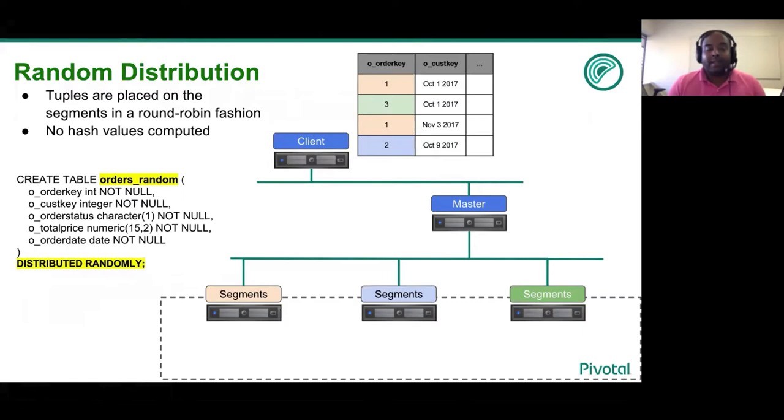The master node for GPDB then connects to three GPDB segment nodes. In this example, we have three segments. The first segment colored in a color of orange is segment one. Second is segment two with the color blue and the third is segment three with color green for your visual aid.